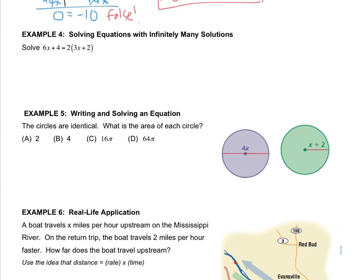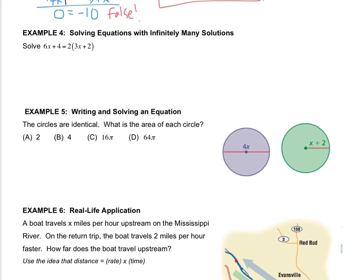Now let's look at example 4. In order to do this, first I have to distribute. So I'll get 6x plus 4 equals — when I distribute — 2 times 3x is 6x, plus 2 times 2 is 4. So if you see something weird happening right now, that's okay. You should. But let's just go with it.